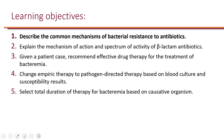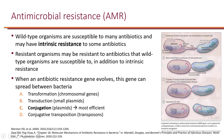The next learning objective is to describe the common mechanisms of bacterial resistance to antibiotics. Wild type bacteria are susceptible to many antibiotics — they are called wild type because they have not developed resistance through mutations or acquisition. However, they can still be intrinsically resistant to some antibiotics, and that determines the spectrum of activity of antibiotics.